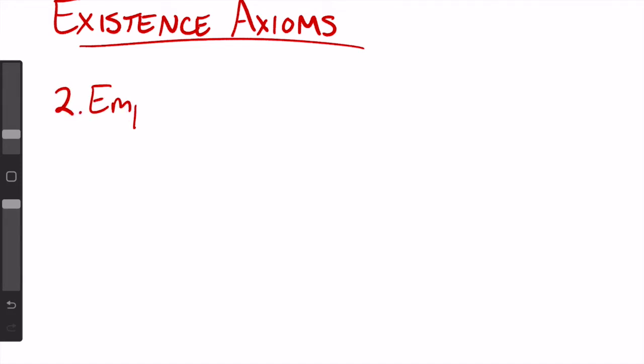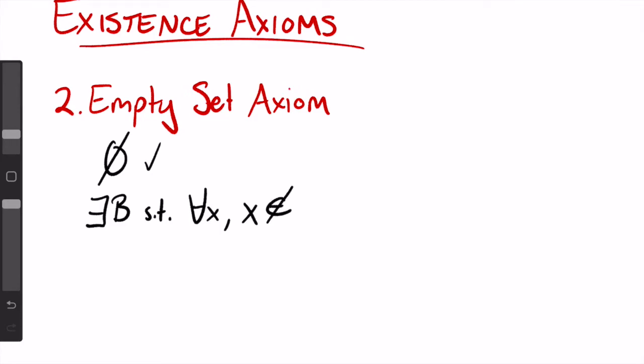Axioms two through five are what I like to call the existence axioms, although I don't think that's an actual term. The first existence axiom, which is the second axiom overall, is the empty set axiom, which simply states that the set with nothing inside it exists. The formal way to say this is, there exists some set b, such that for all x that could possibly exist, x is not in b.